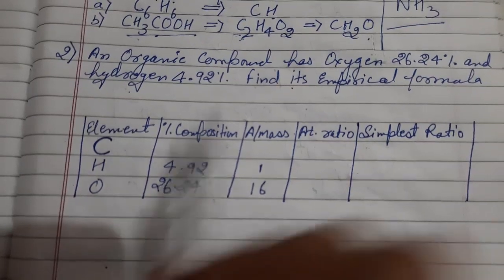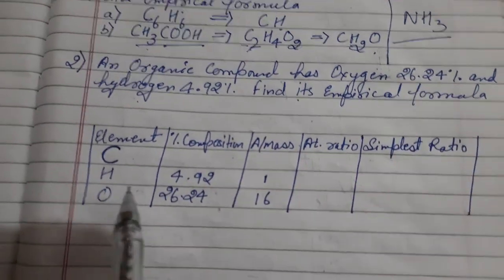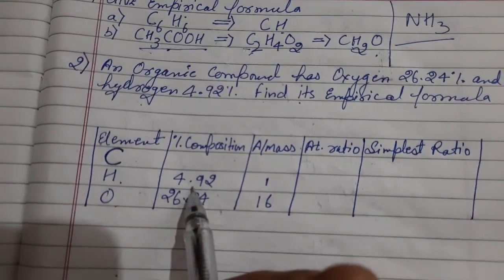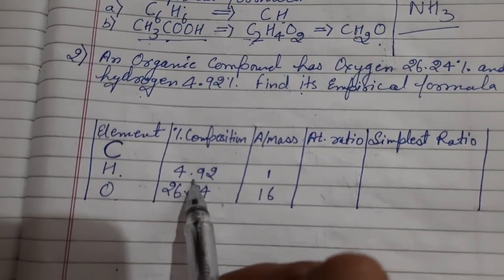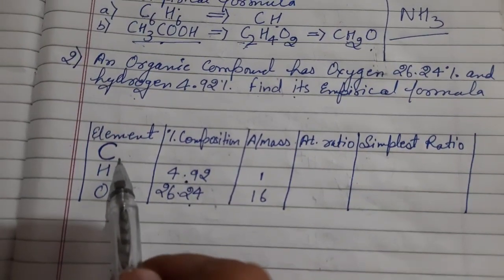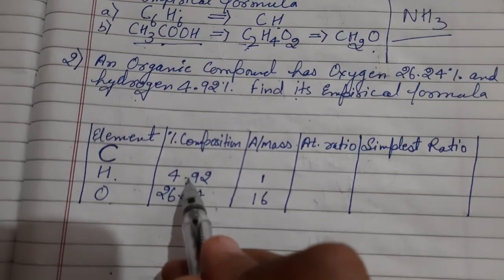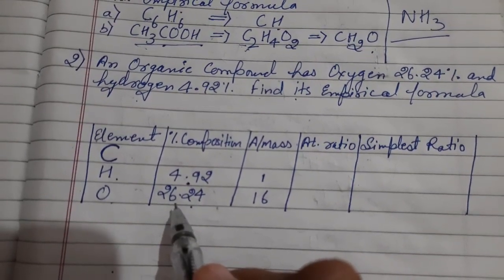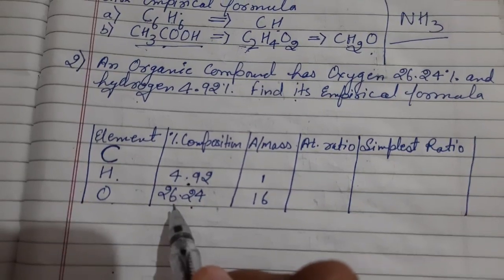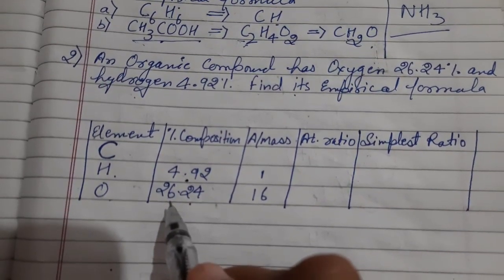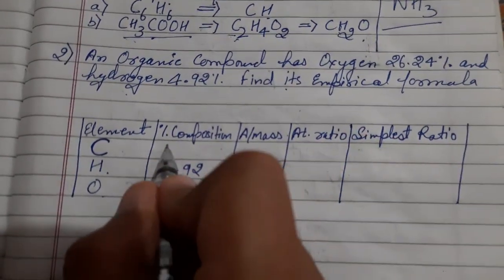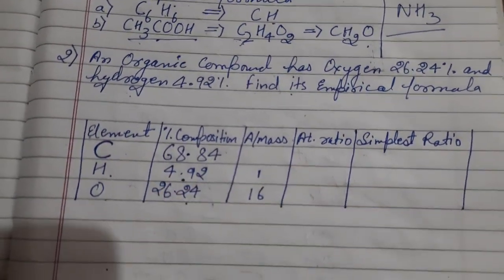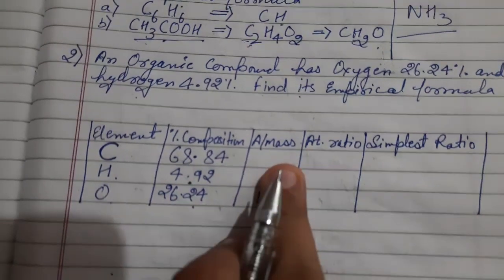Most of you will be thinking that percentage composition of oxygen is given, hydrogen is also written here, so how we can calculate the percentage composition of carbon? It is very simple - you have to add these two, 4.92 plus 26.24, it comes around 31.16, and you can subtract it from 100 and it will be coming out to be 68.84.